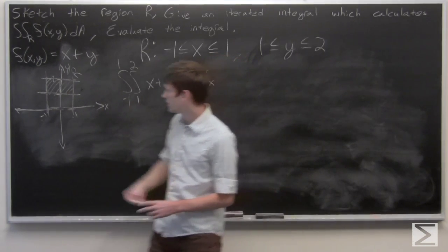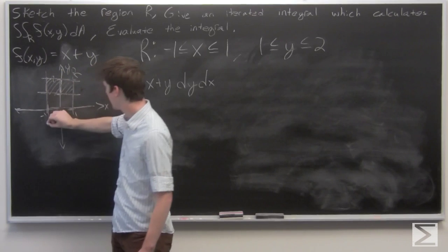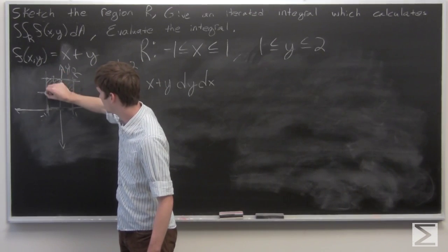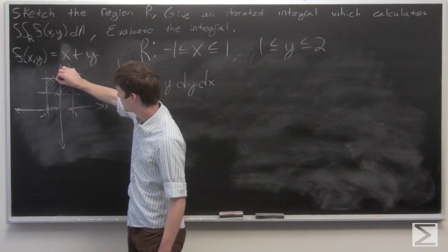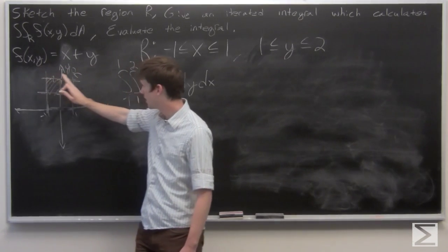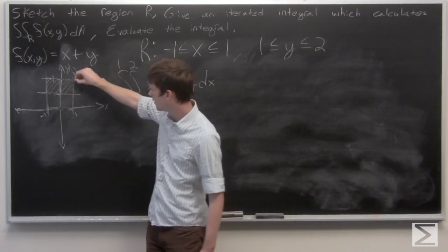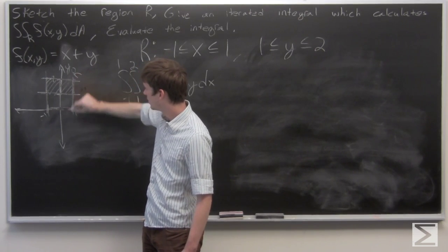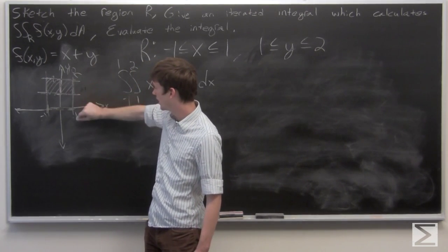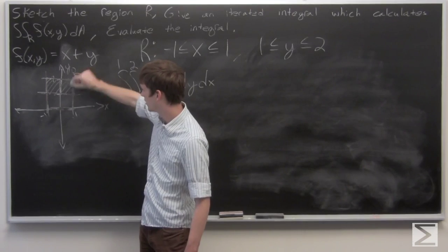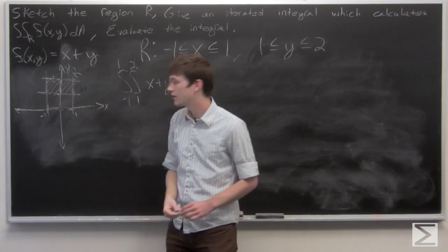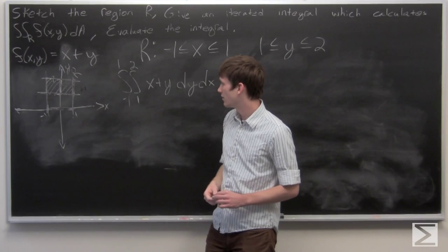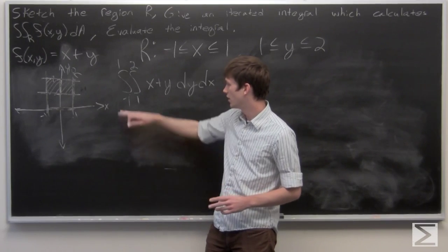So we're taking at x equals negative 1 the integral from 1 to 2, and sweeping that through, calculating all the way up to when x is equal to 1, where we're also calculating the integral from 1 to 2. That's given by our iterated integral.